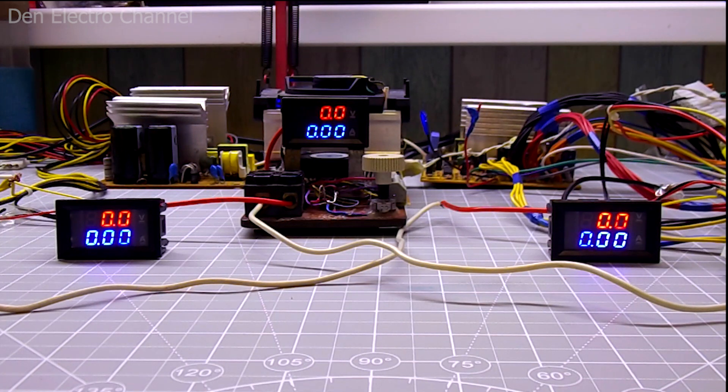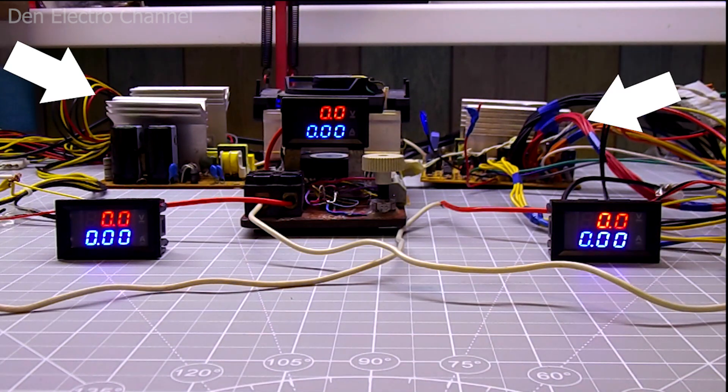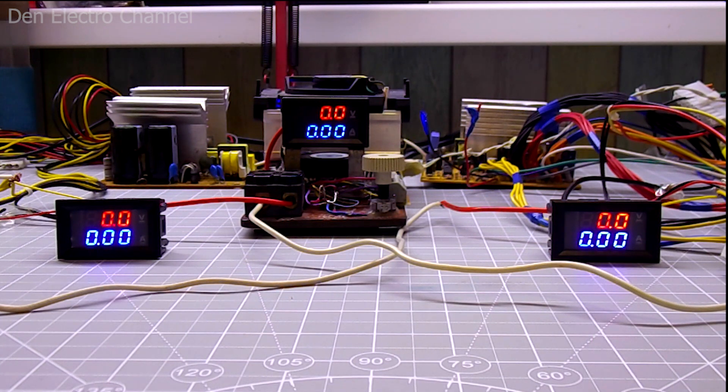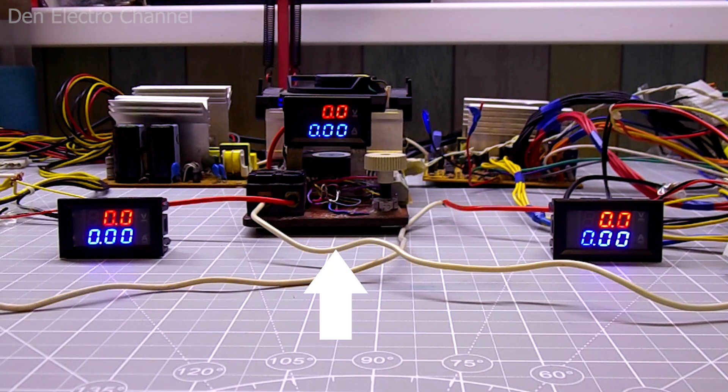Now let's see how they will work. Here I have everything assembled. These are two disassembled power supplies, and these are two volt ampere meters. Each of these volt ampere meters will show its own power supply voltage, and the volt ampere meter on the electronic load will show the total voltage.